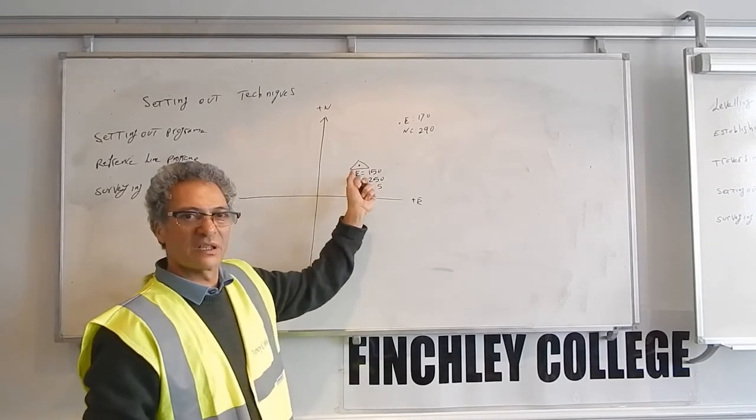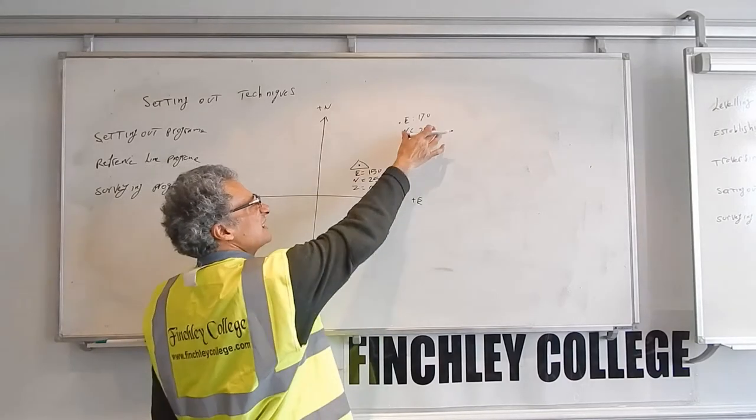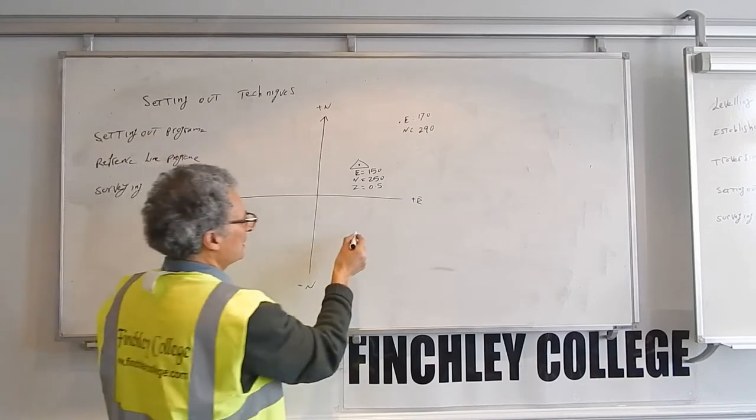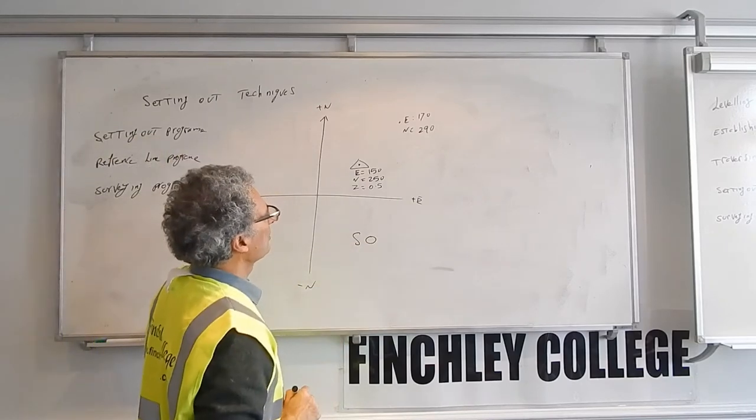So once you find out where the instrument is, now you want to set out the point with these coordinates. So you go to the setting out program, it's called SO, setting out program.